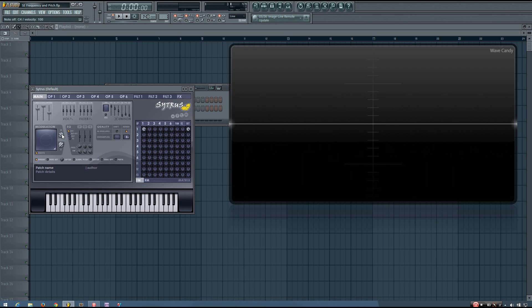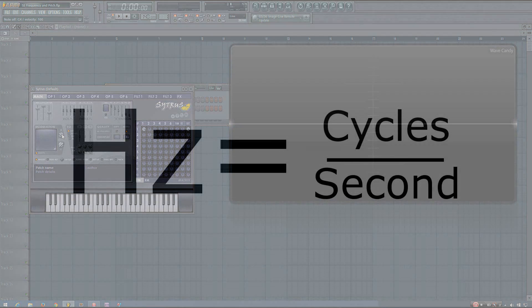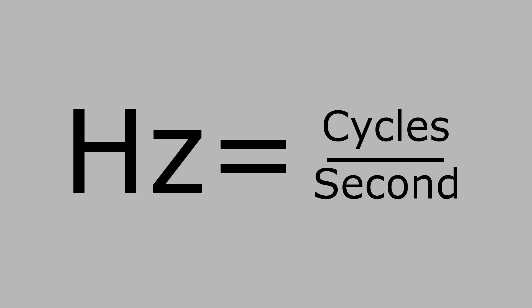When we work with audio, we don't use the wavelength value to indicate pitch. Instead, we use frequency, which we measure in hertz. Hertz is a unit of frequency that is defined as the number of cycles per second of a periodic phenomenon.